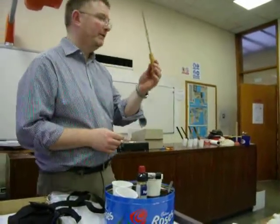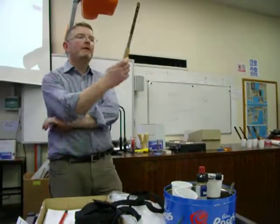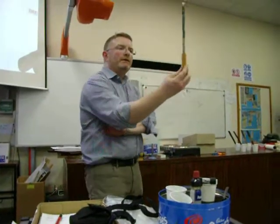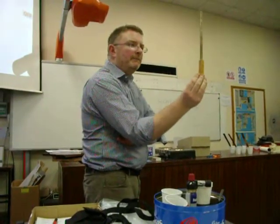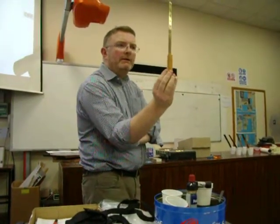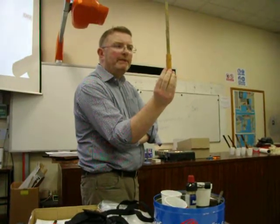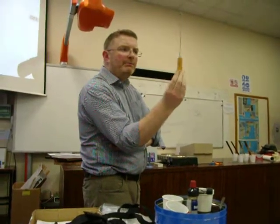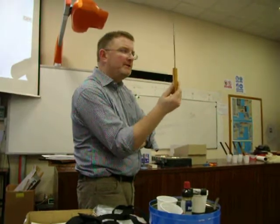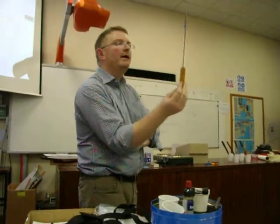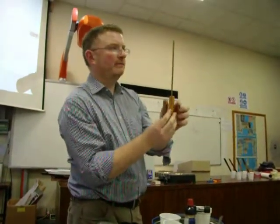Now, so anyway, this is a bimetallic strip. Can you see the way it's made? It's got brass on one side, a strip of brass, and then a strip of steel on the other. And it's riveted together.